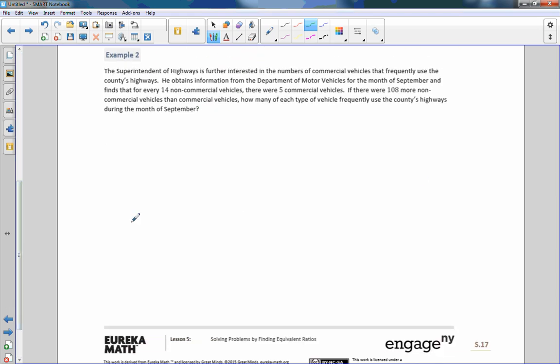Example two. Superintendent of highways is further interested in the number of commercial vehicles that frequently use the county's highway. Now a commercial vehicle is like a large truck, like a dump truck, tractor, trailer, that kind of thing. Those are commercial vehicles. He obtains information from the Department of Motor Vehicles for the month of September, and finds that for every 14 non-commercial vehicles, there are five commercial. So there's our, that's how we start with our tape diagram. For every means that we have a ratio. Fourteen non-commercial, five commercial.